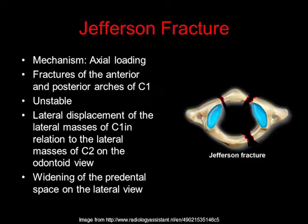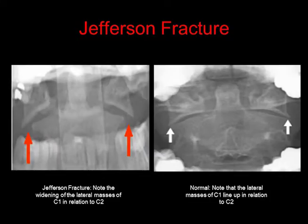A Jefferson fracture occurs because of axial loading. These are fractures of the anterior and posterior arches of C1, and this is considered an unstable fracture. There is lateral displacement of the lateral masses of C1 in relation to the lateral masses of C2 on the odontoid view. Widening of the pre-dental space is also seen on the lateral view. On the left is an example showing widening of the lateral masses of C1 in relation to C2, versus the normal relationship on the right.